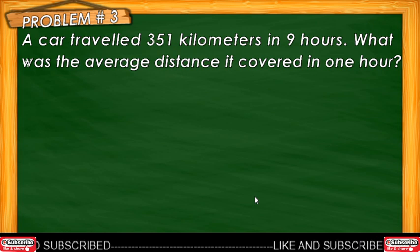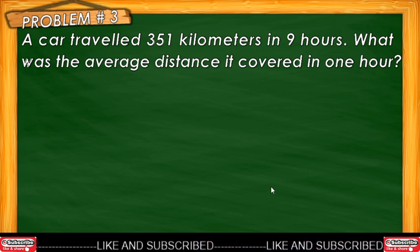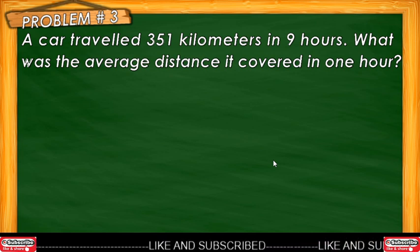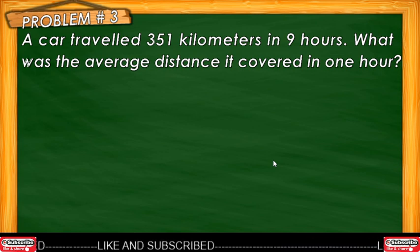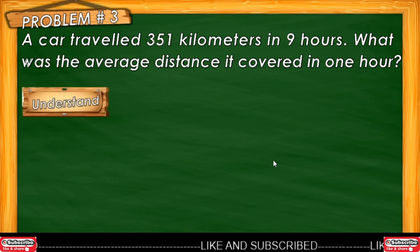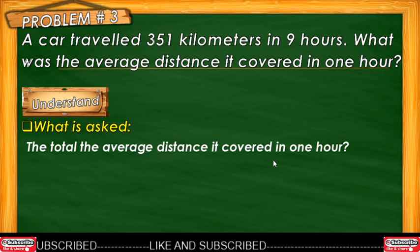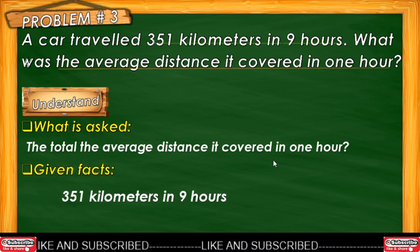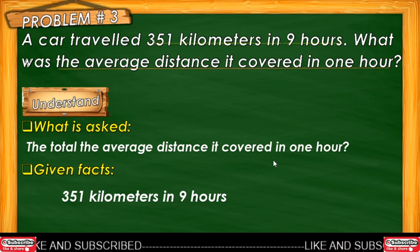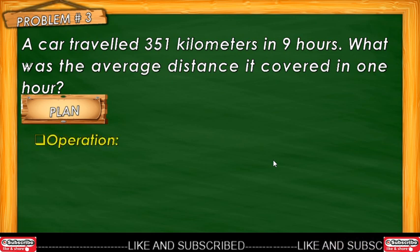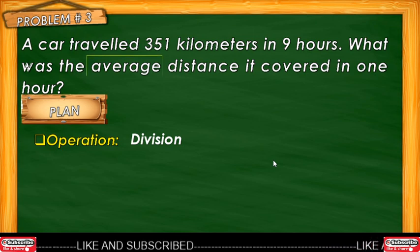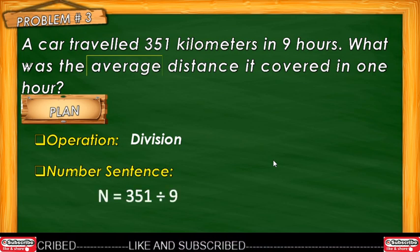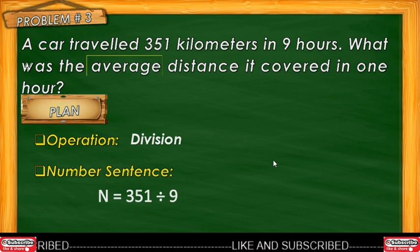Let's try another problem, Number 3. A car traveled 351 kilometers in 9 hours. What was the average distance it covered in 1 hour? This is a routine problem. What is asked? The average distance covered in 1 hour. Given facts: 351 kilometers in 9 hours. The operation is division because of the word 'average.' Number sentence: N = 351 ÷ 9.